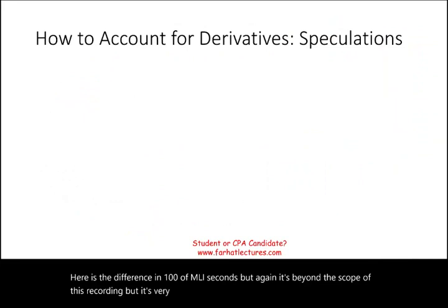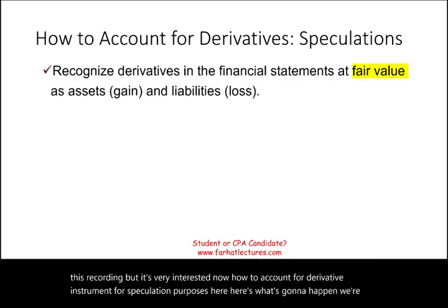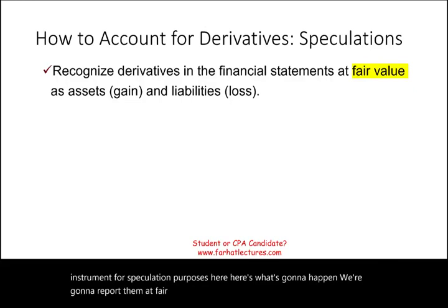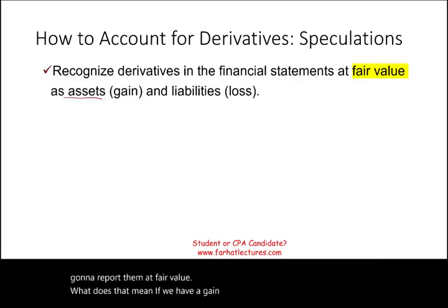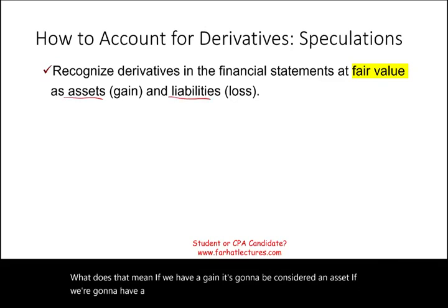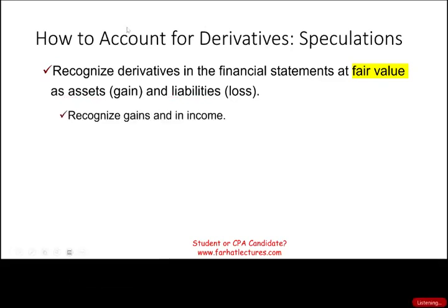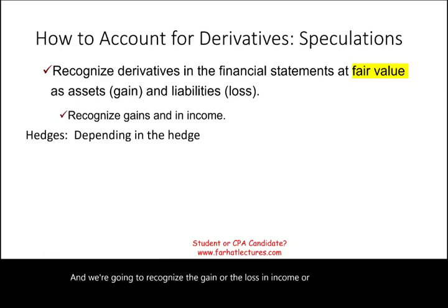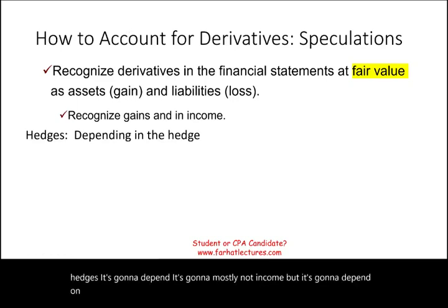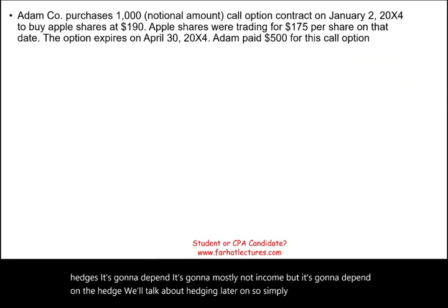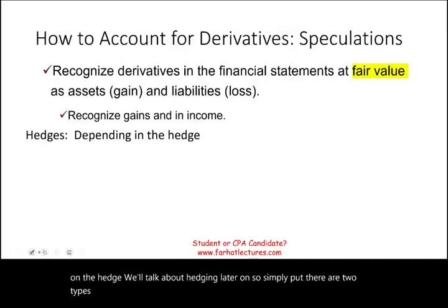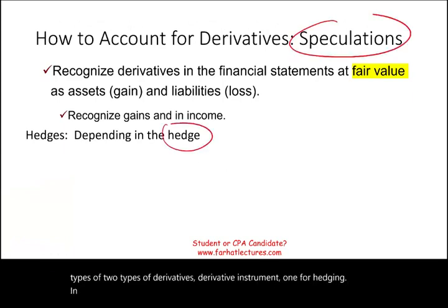Now, how do we account for a derivative instrument used for speculation purposes? We're going to report them at fair value. If we have a gain, it's going to be considered an asset; if we have a loss, it's going to be considered a liability. We're going to recognize the gain or the loss in net income. For hedging, it depends on the type of hedge — we'll talk about that later. Simply put, there are two types of derivative instrument use: hedging and speculation. For speculation, gains and losses go into net income.